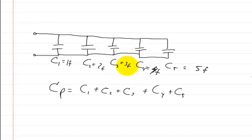It doesn't matter how many capacitors you have, they just add up the same way. So this would just be one plus two plus three plus four plus five, and that's how you would add them up.